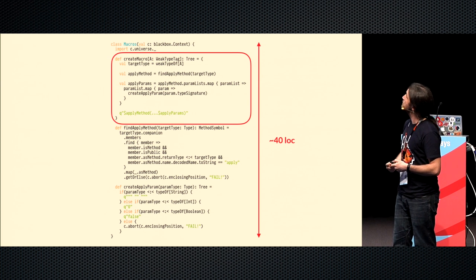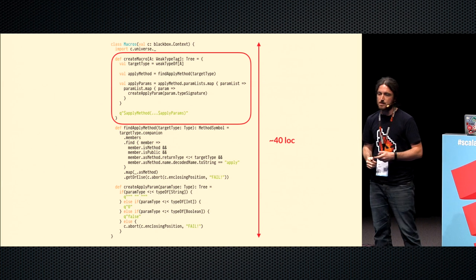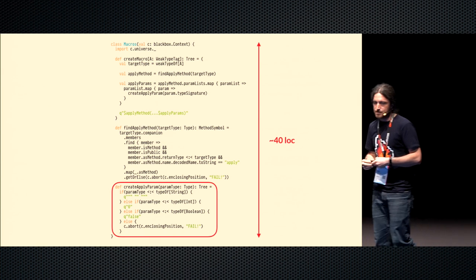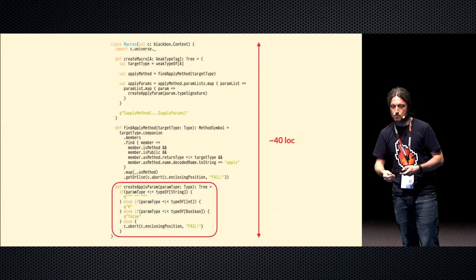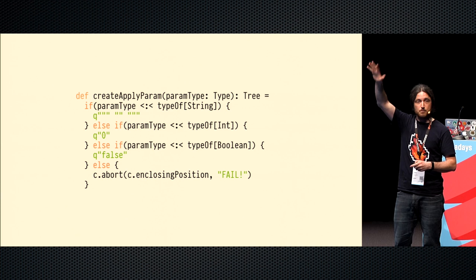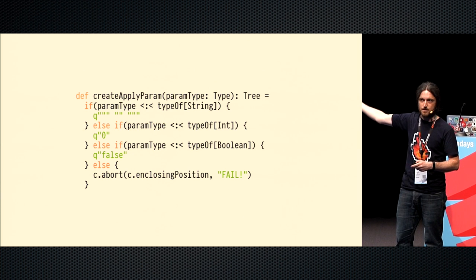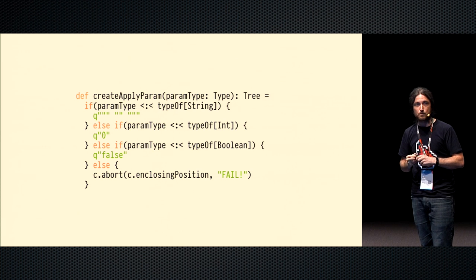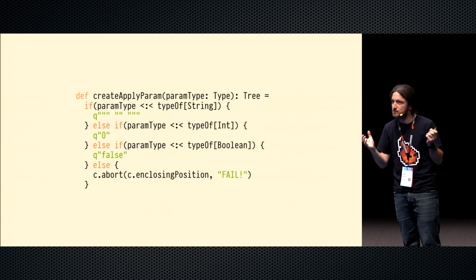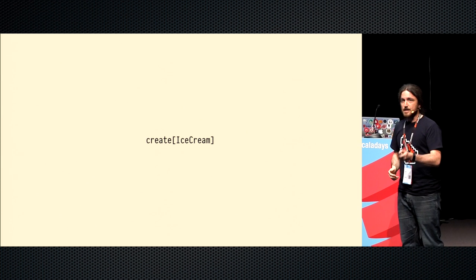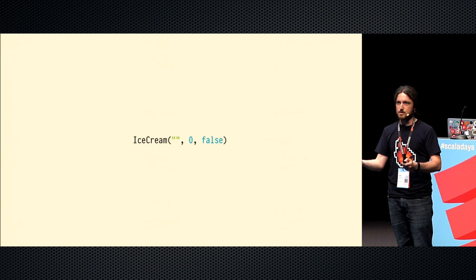That part at the top is the three-line version expanded out. We have a helper method to look for an apply method — finding a member that's a method, is public, has the right return type, and so on. And then we have a helper method to fill in the parameter types. This is the only bit of code I want to focus on: it takes a type of one of those parameters and asks what expression should I fill in? The simplest possible implementation: if it's a String, return an empty string expression; if it's an Int, return zero; if it's a Boolean, return false. If it's anything else — we only designed this to work with three types — we raise a compilation error. That gives us working code: we can take an IceCream with a String, Int, and Boolean and build our constructor.